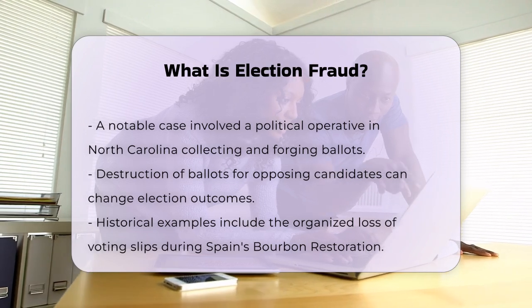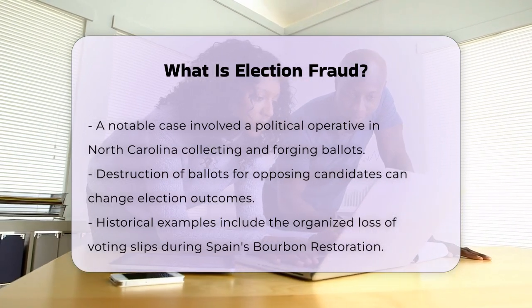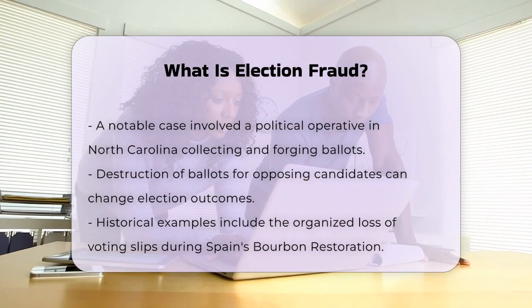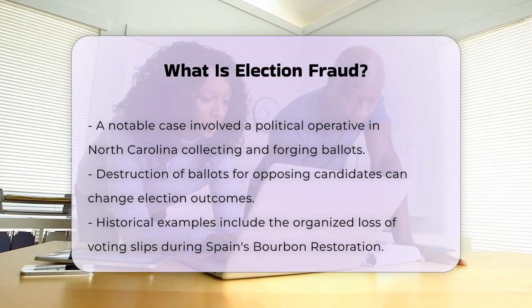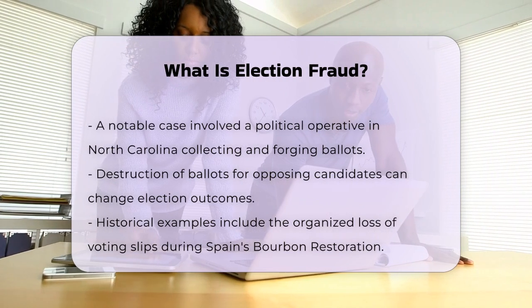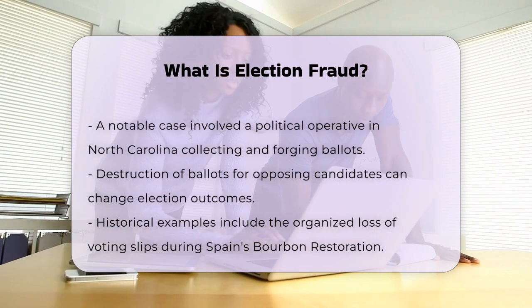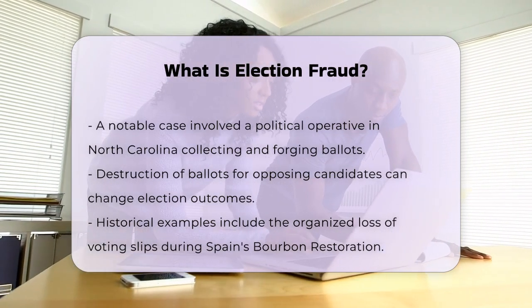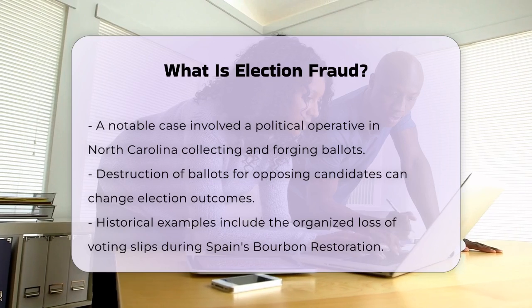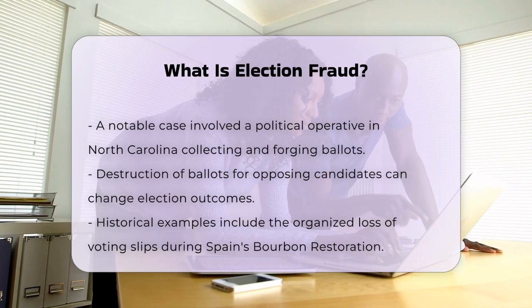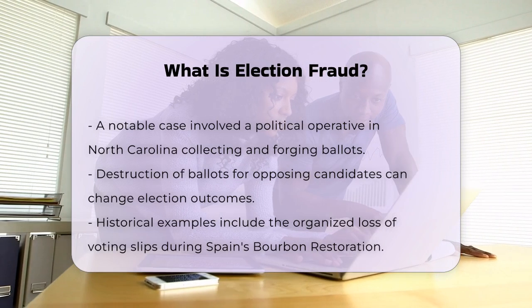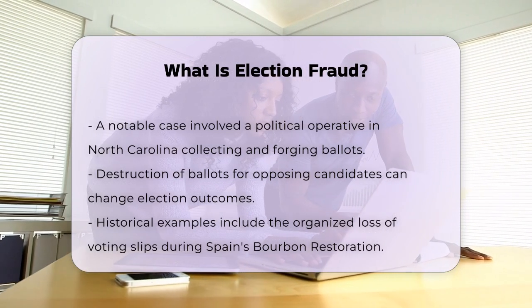A notable case in North Carolina involved a political operative who collected ballots, forged witness certifications, and returned them in a way that concealed the fact that the voter had not personally mailed them. Electoral fraud can also occur through the destruction of ballots, such as destroying ballots for an opposing candidate or party, which can change the overall result of a close election.